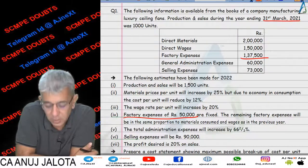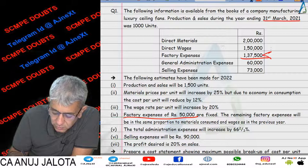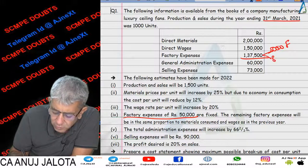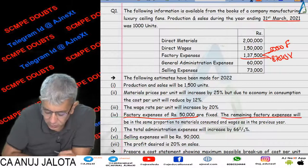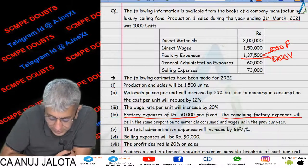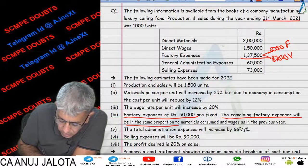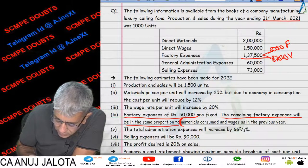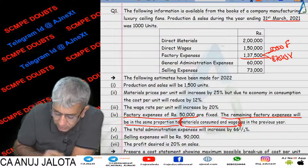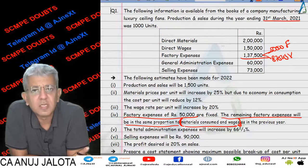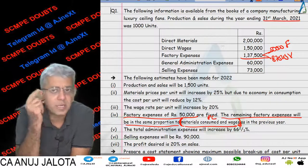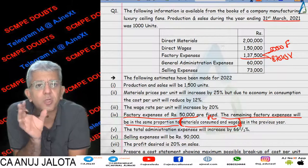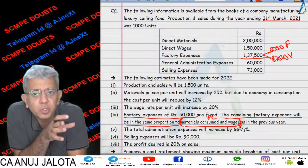Factory expenses of rupees 50,000 are fixed. So out of the total, 50,000 rupees is fixed, and the leftover will be 87,500 — that will be variable. The remaining factory expenses of 87,500 will be in the same proportion to materials consumed and wages as in the previous year. Materials consumed and wages means prime cost.